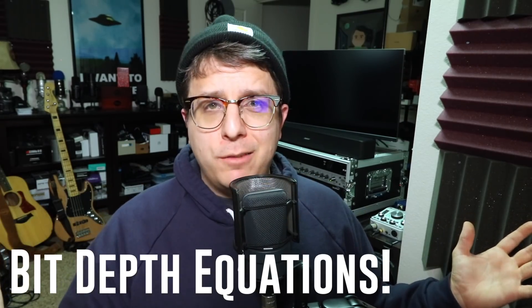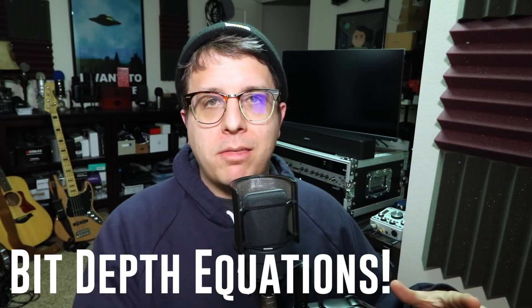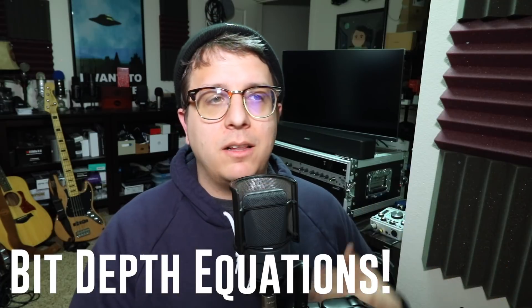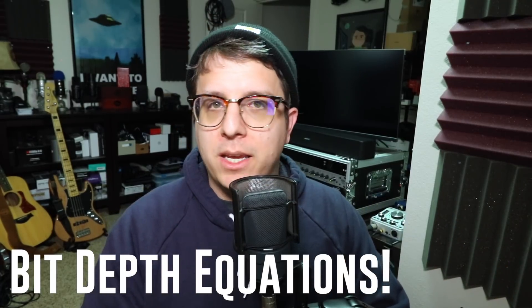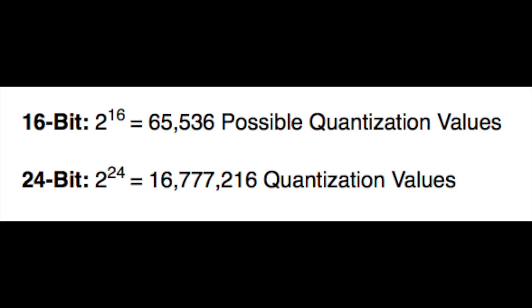Now, just for the hell of it, let's go ahead and dive further into the theory and look at some equations that tell us how much information is actually being captured. So the number of values that your analog signal can be quantized to is calculated by taking two to the nth power, where n is going to be the bit depth you're using to record at. So if we look at 16 bit, we take two to the 16th power, and that gives us 65,536 possible values that your analog signal can be quantized to.